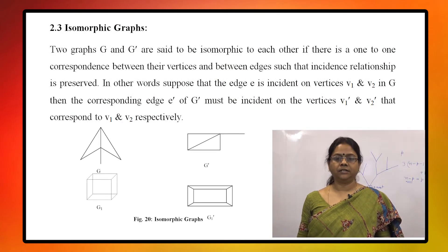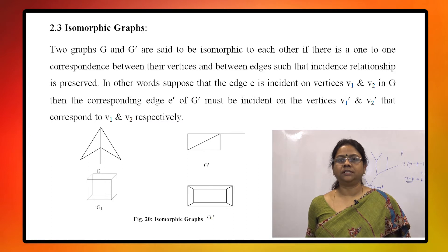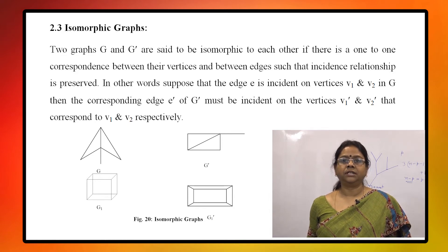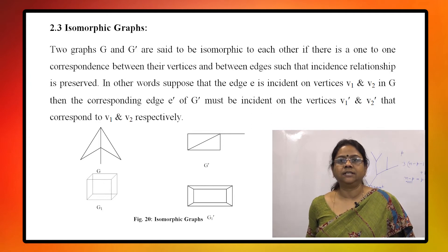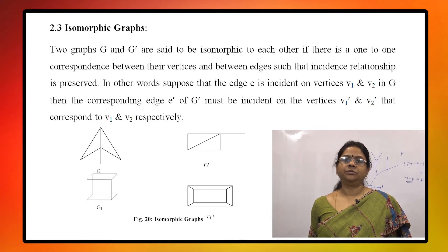Now we define isomorphic graphs. Let two graphs G and G' be given. They are said to be isomorphic to each other if there is a one-to-one correspondence between their vertices and between their edges such that the incidence relationship is preserved. For example, in figure 20, G1 and G1' are both graphical representations of a cube viewed from two different angles — they are the same graph viewed differently, so they are called isomorphic graphs.